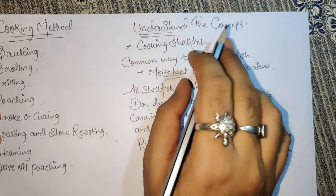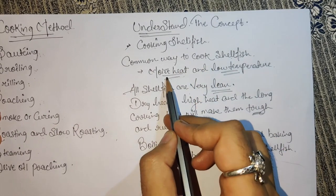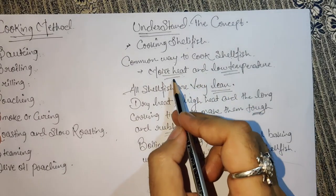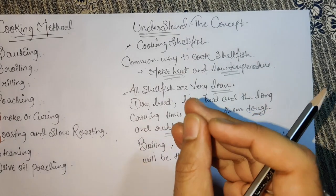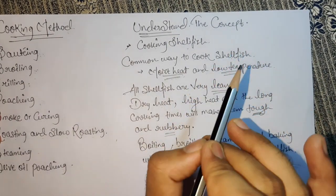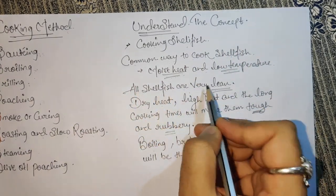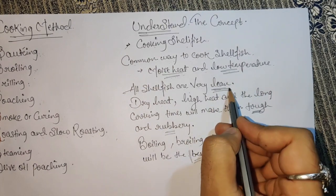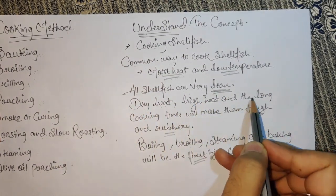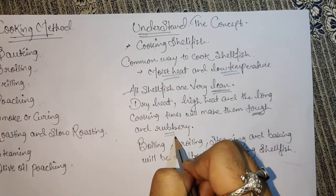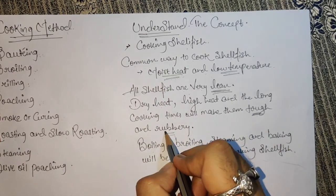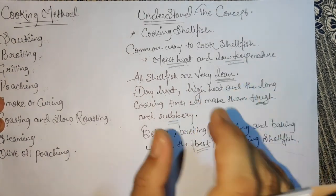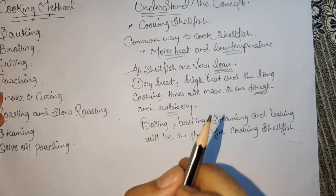Let's understand the concepts of cooking shellfish. The common way to cook shellfish is with moist heat at a low temperature. Moist heat is necessary because if exposed to direct dry heat, the shellfish will get stiff. Shellfish are lean — they don't have much fat, muscle, or bone. Dry heat, high heat, and long cooking time will make them tough and rubbery. For example, if you overcook shrimps, they will be very rubbery.